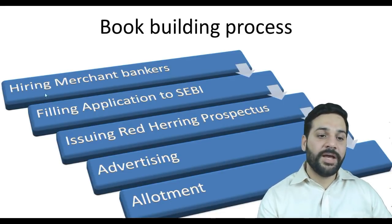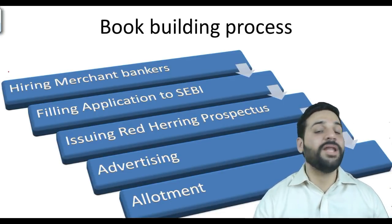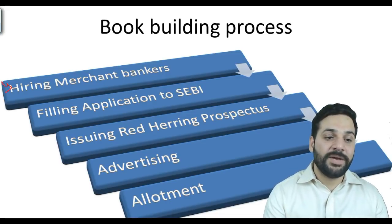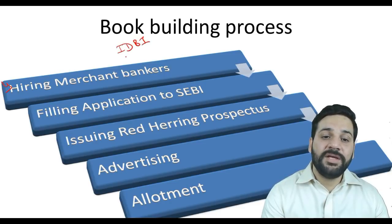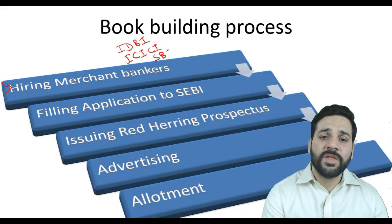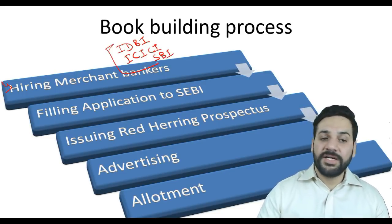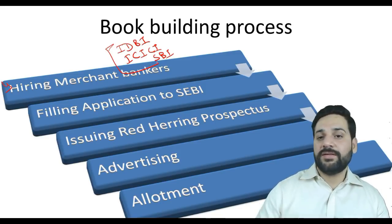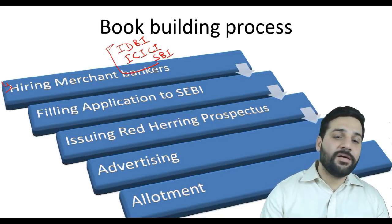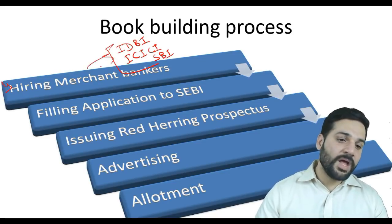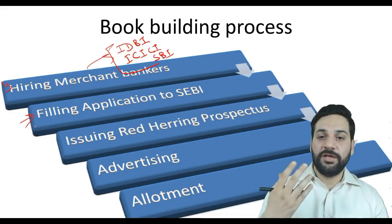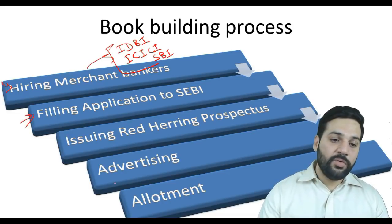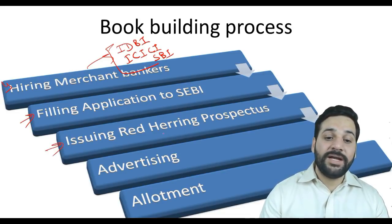The book building process starts with the hiring of a merchant banker. For a company wanting to raise money from the capital market, they first hire a merchant banker — such as IDBI, ICICI, or SBI, all of which provide merchant banking facilities. Then the company files an application with SEBI, and after approval they issue the red herring prospectus.